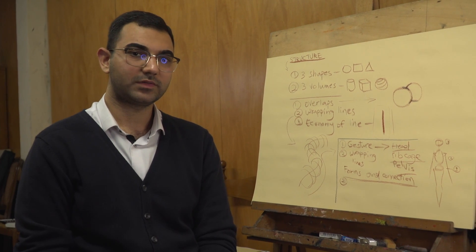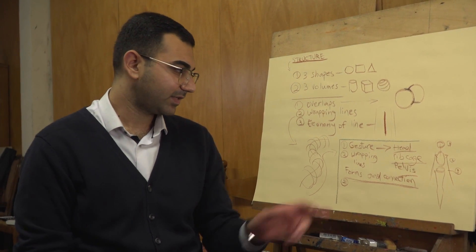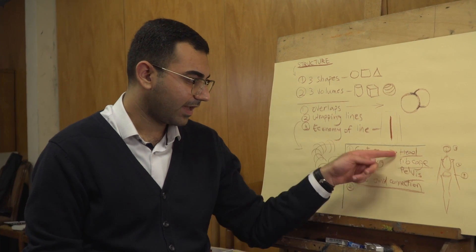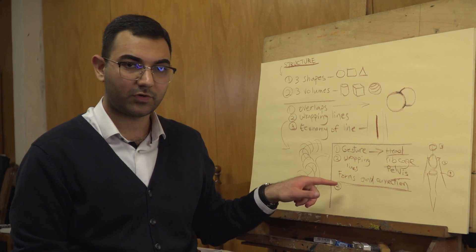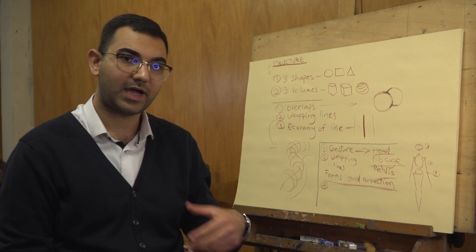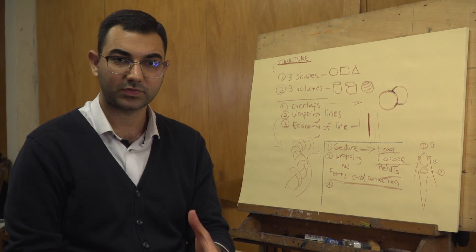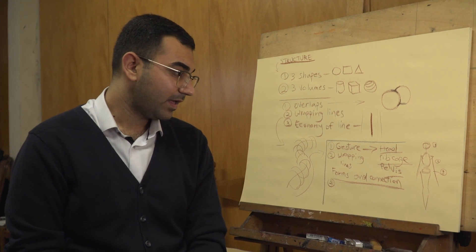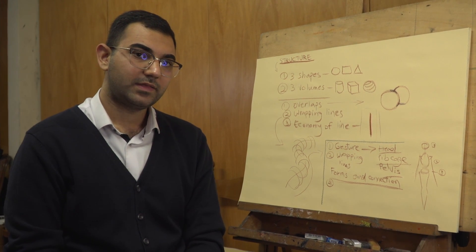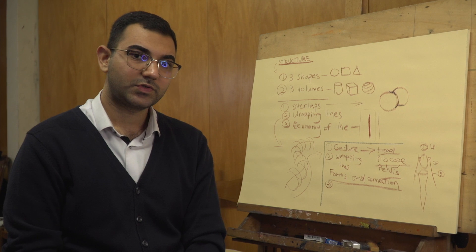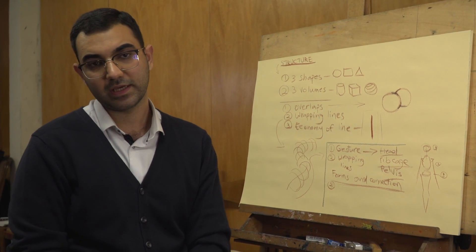Let's recap the process of adding structure to your drawings. First, gesture; then adding head, ribcage, and pelvis. Next, add wrapping lines and think about the forms of these parts and how to connect them together to create harmony and beauty. You can also add overlaps and economy of line — they will help you clarify your drawing and communicate your statement to the viewer.